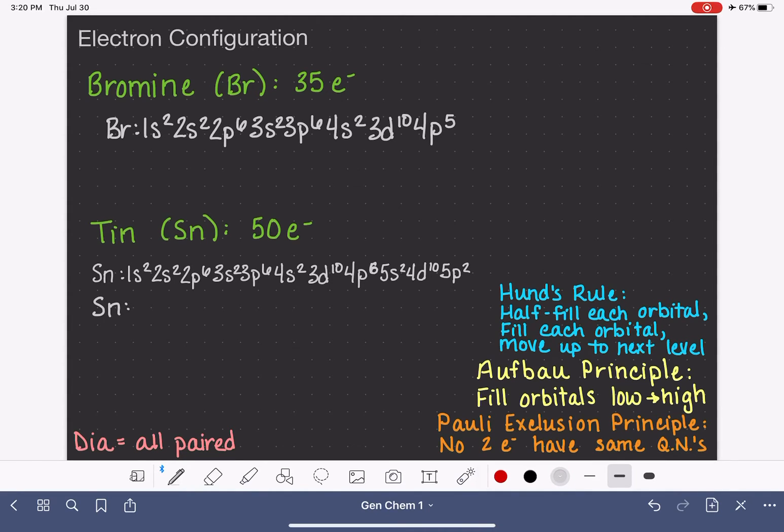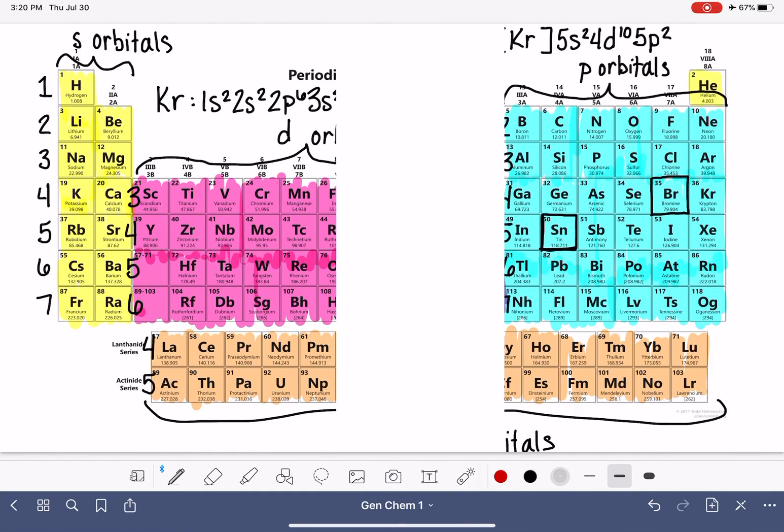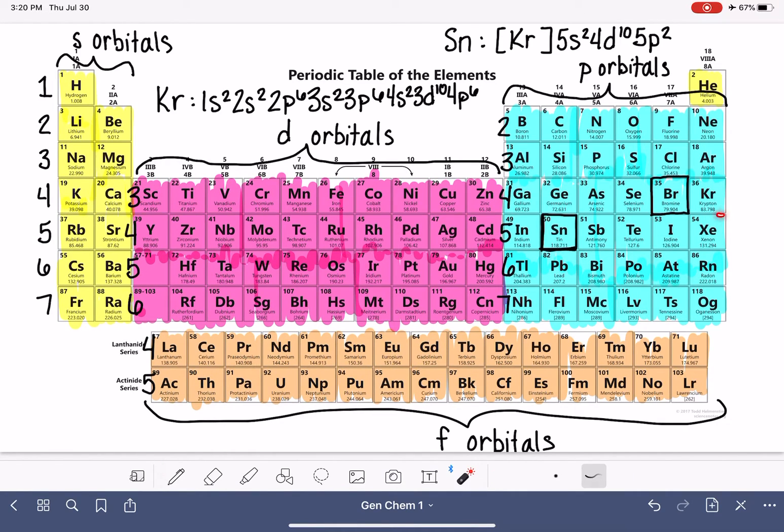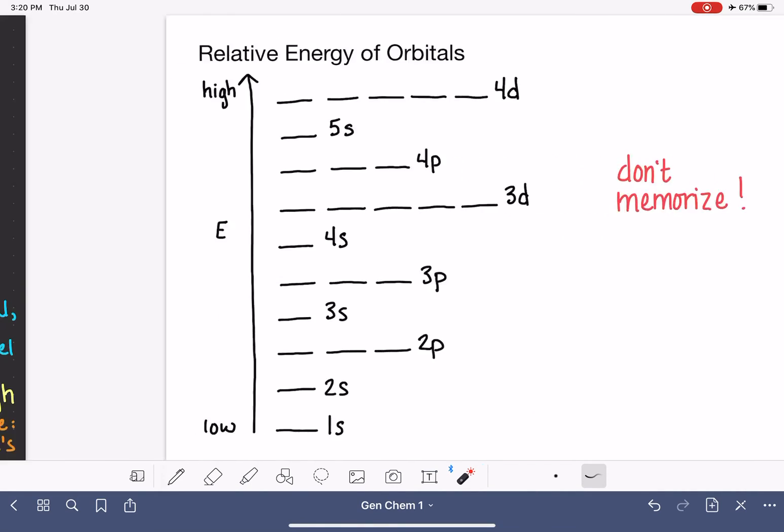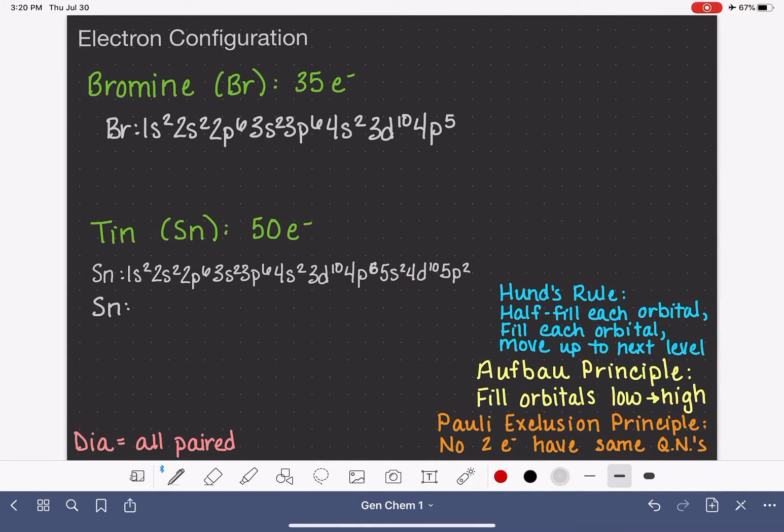We said again that we were going to abbreviate it with krypton, the last noble gas before we come to tin. Krypton. And the symbol for krypton represents everything all the way through 4p⁶. So krypton in square brackets, followed by 5s², 4d¹⁰, 5p².